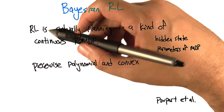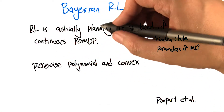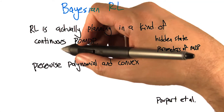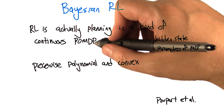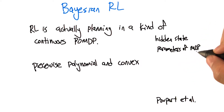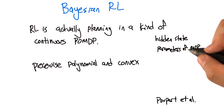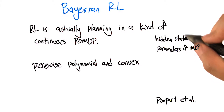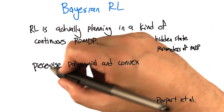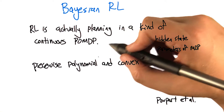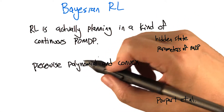What I'm basically arguing is that we can think of reinforcement learning as a kind of planning — it's not learning at all. It's actually planning in a kind of continuous-space POMDP, where the hidden state is the set of parameters of the MDP that we're trying to learn. Now, there's an infinite number of those, which makes things a little bit awkward. We don't really get the piecewise linear and convex property anymore, but it can be shown that the value function in this continuous-space POMDP is actually piecewise polynomial and convex.